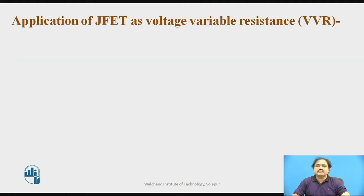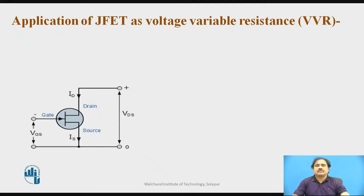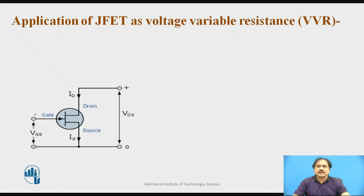We go into the first discussion point, which is the JFET's application as the voltage variable resistor. The term describes a resistor whose value depends upon the voltage in the circuit. Here, we use a FET that has three terminals: drain, source, and gate.